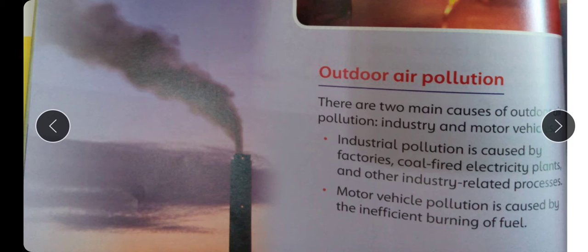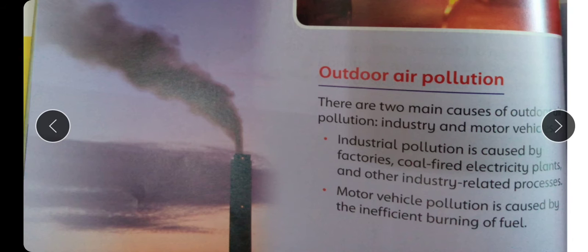Page apni book open kiya karein. There are two main causes of outdoor air pollution: Industry and motor vehicles. Industrial pollution is caused by factories — coal-fired electricity plants jo bijli banana wale plants hain wo bhi air ko pollute karte hain — and other industry-related processes. Motor vehicle pollution is caused by the insufficient burning of fuel.